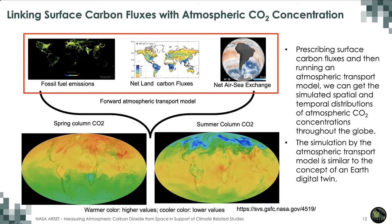Two examples of simulated column CO2 concentration are shown — one in spring, one in summer. Warmer colors represent higher CO2 concentration while cooler colors represent lower CO2 concentration. Spring has higher CO2 in the northern hemisphere since surface carbon fluxes are dominated by fossil fuel emissions and ecosystem respiration. In summer, especially in the northern hemisphere, CO2 concentration is much lower because carbon uptake by photosynthesis outpaces carbon release from ecosystem respiration and fossil fuel emissions. This is how the atmospheric transport model links surface carbon fluxes with atmospheric CO2 concentration.